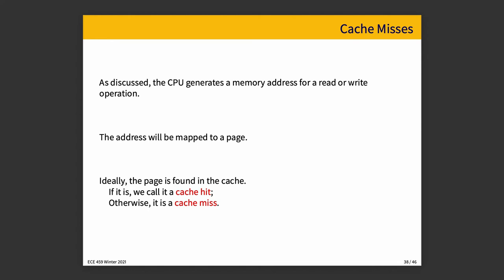The CPU generates a memory address for any read or write operation, and that address is mapped to a page. Pages are just chunks of memory, and ideally whatever page we are looking for is found in the cache — available quickly, close at hand. If the page is found in cache, we call that a cache hit; otherwise it is a cache miss.